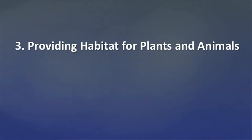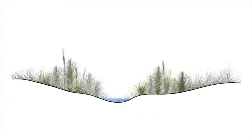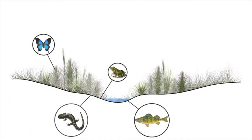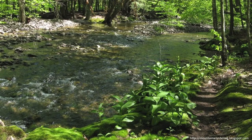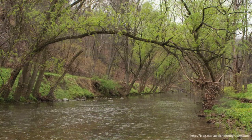Providing habitat for plants and animals: floodplains are also home to many types of plants and animals. The floodplain provides habitat for insects, birds, reptiles, amphibians, and mammals. Additionally, vegetated floodplains provide shade for the adjacent rivers and streams, increasing dissolved oxygen levels, and consequently improving habitat for aquatic plants and animals.